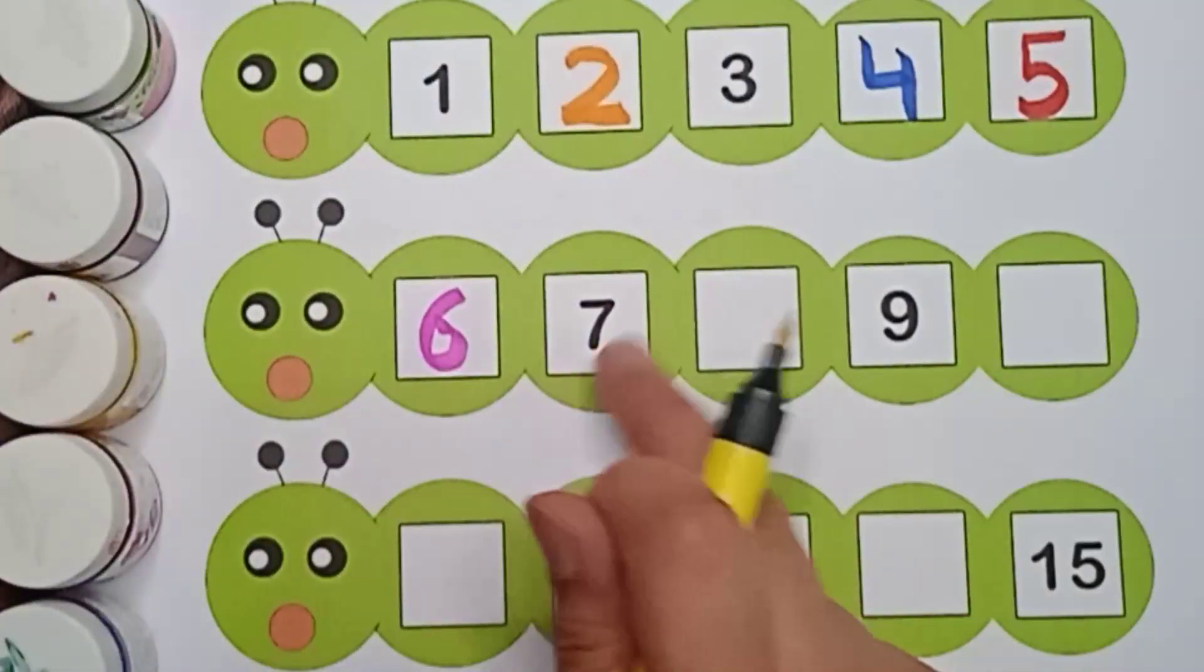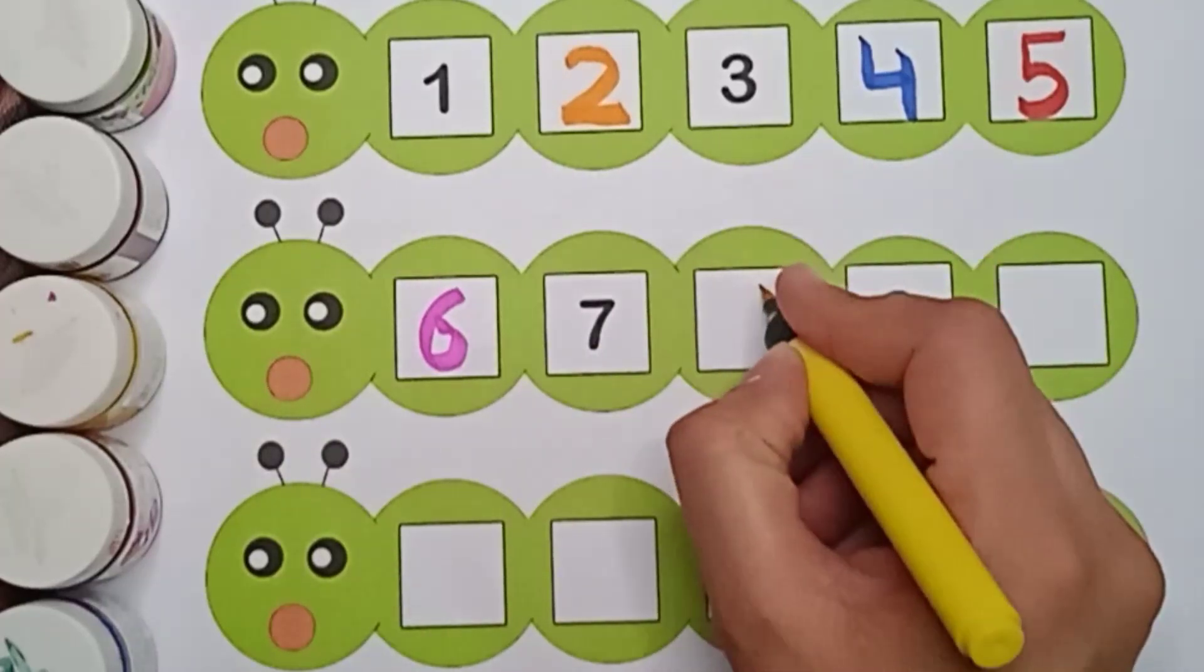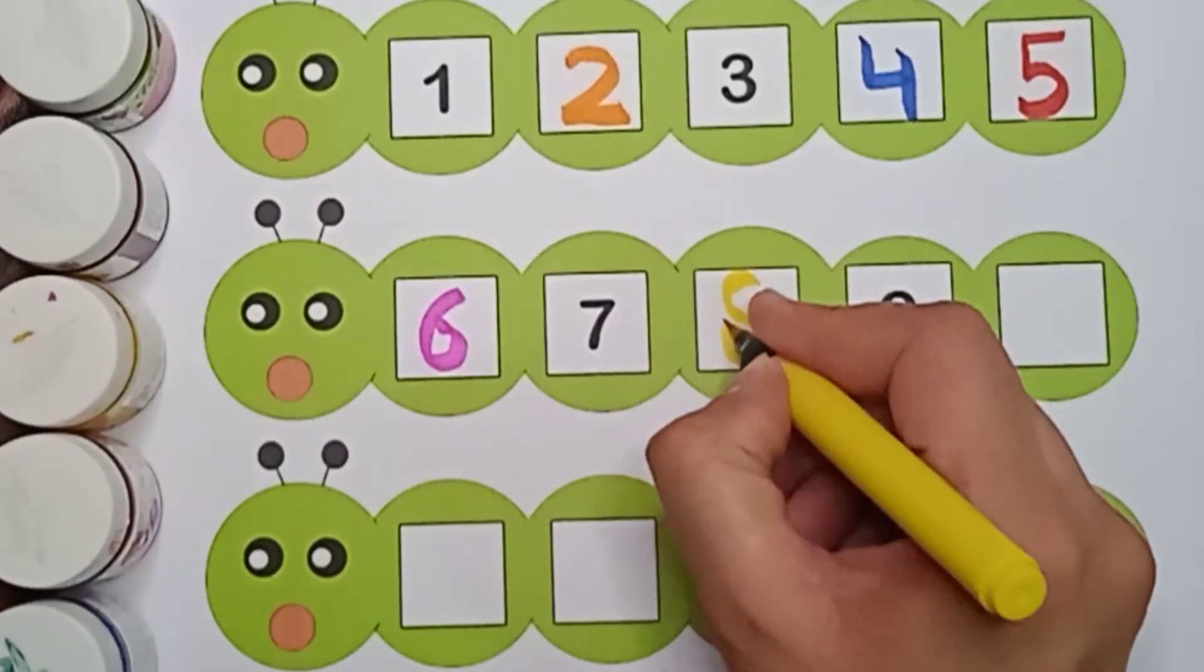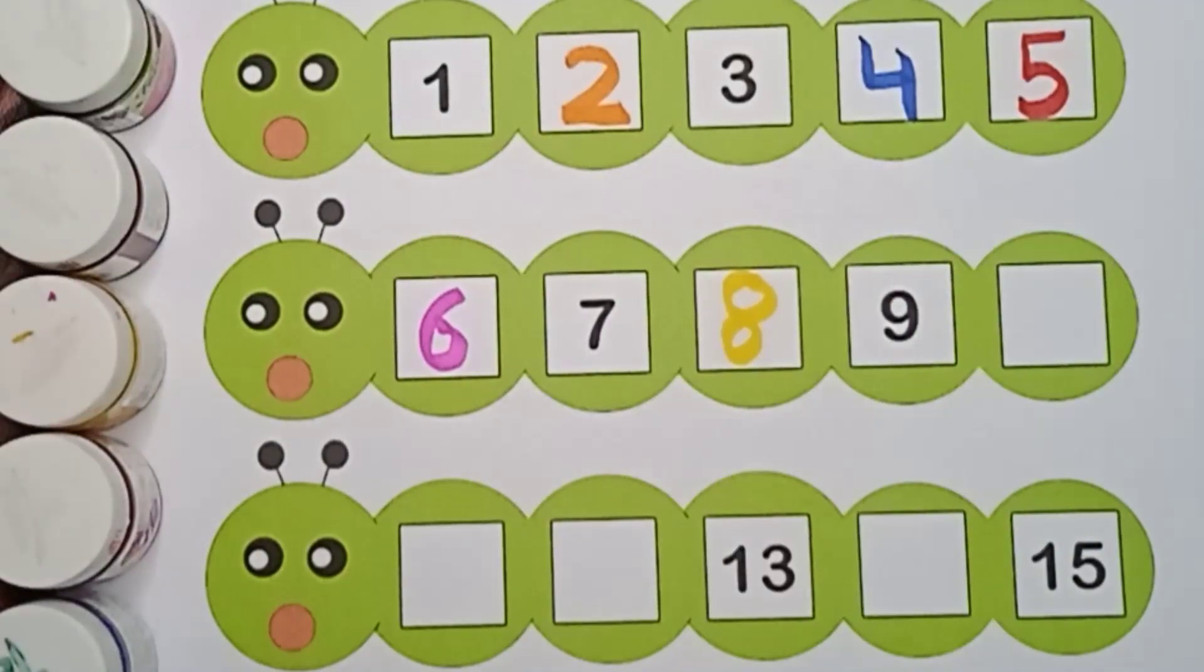Yellow color. 6. This one is 7. And what comes after 7? 8. Yellow color. 8.